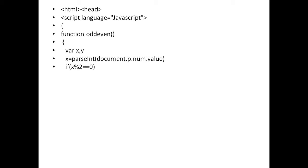I am putting an if condition: if x percent 2 — that means x mod 2 — double equal to 0. In mathematics you write single equal, which is treated as an assignment operator. But when you write double equal to, this operator is treated as a logical comparison operator in JavaScript. It will compare whether the remainder of x divided by 2 is equal to 0. If both values are 0, the function returns true — meaning the number is even. Otherwise it returns false, meaning the number is odd.